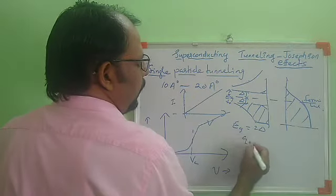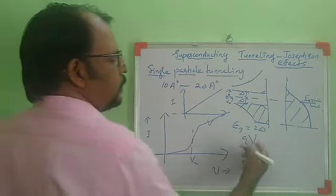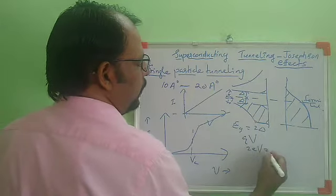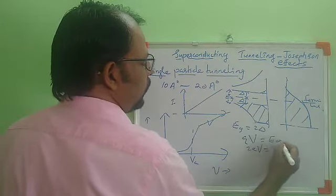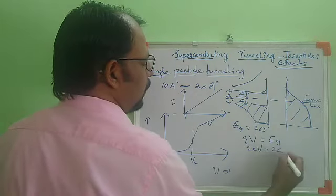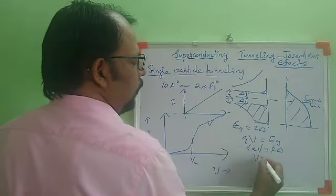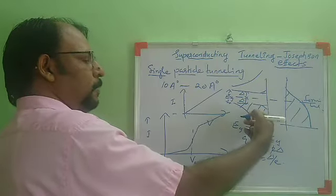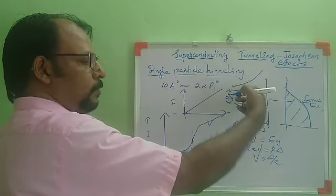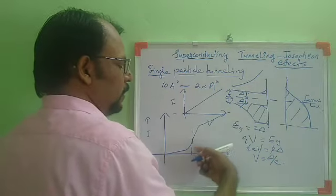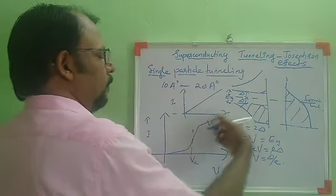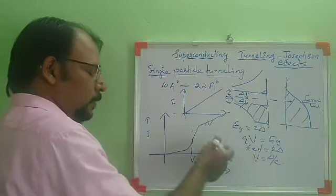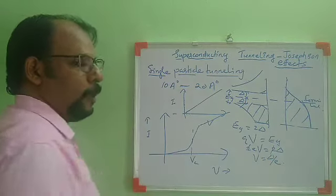If we give a potential V, then the work done is QV. For an electron pair, the charge is 2e, so we can write 2eV equal to E_g. Since E_g is 2 delta, V will be delta by e. So when the voltage exceeds delta/e, the super electrons make a transition to normal electrons, and the conductor behaves like the case with normal electrons. The relation is similar to that of normal electrons.